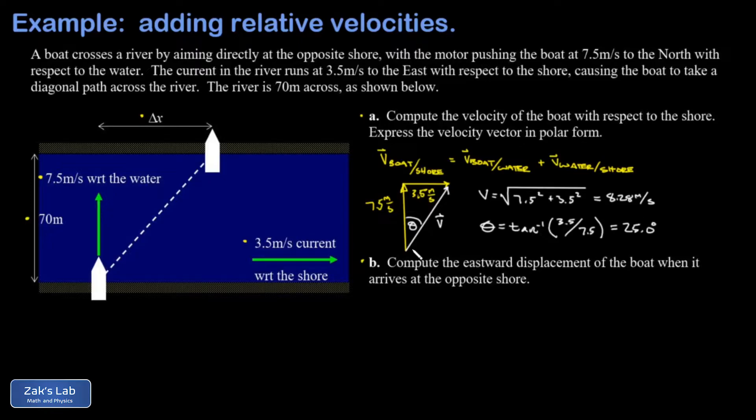Now if you prefer, you could label that angle with respect to the eastward direction instead. I'll call that phi, and of course theta and phi add to 90 degrees. So it's also fine to express it as an angle phi with respect to the east, and that would be 65 degrees.